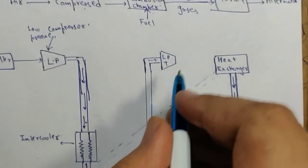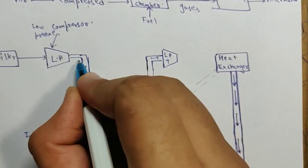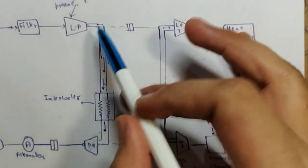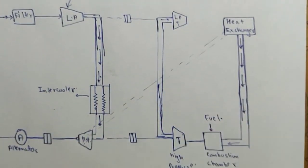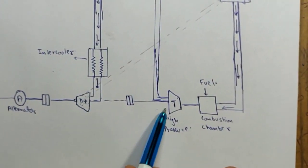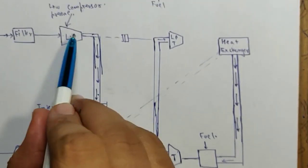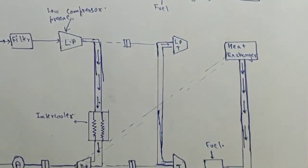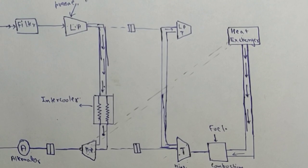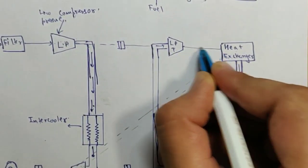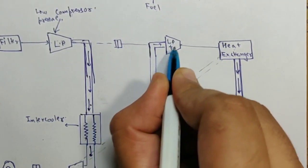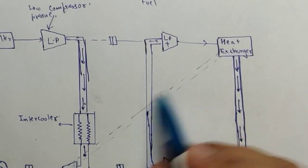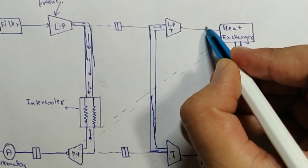This low pressure turbine is coupled with the low pressure compressor. Similarly, the high pressure compressor takes the energy of the high pressure turbine to run, and the low pressure compressor takes the energy of the low pressure turbine to run. They are both coupled with their respective turbines so that we don't require any external sources for the compressors to run. After the gas has expanded in the low pressure turbine, it is sent to the heat exchanger to utilize the remaining heat energy in the gas.